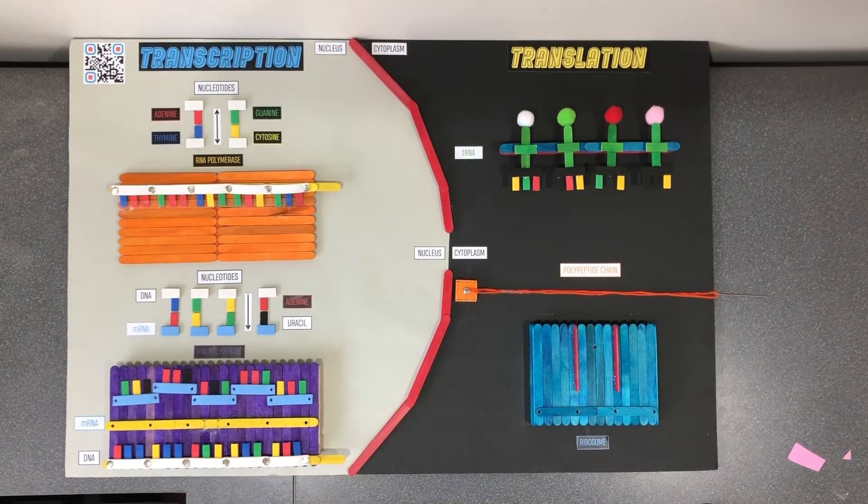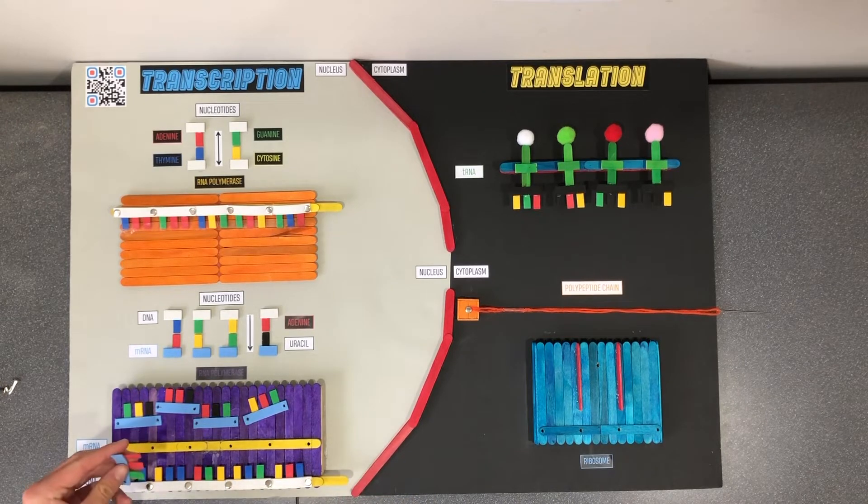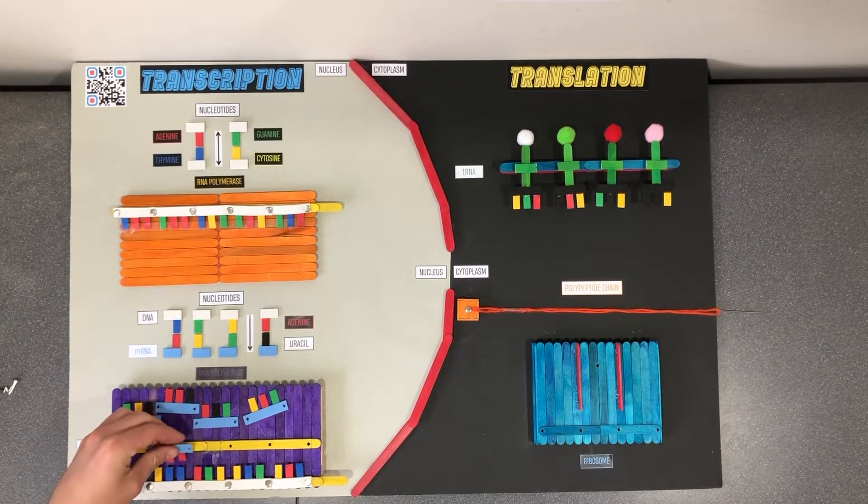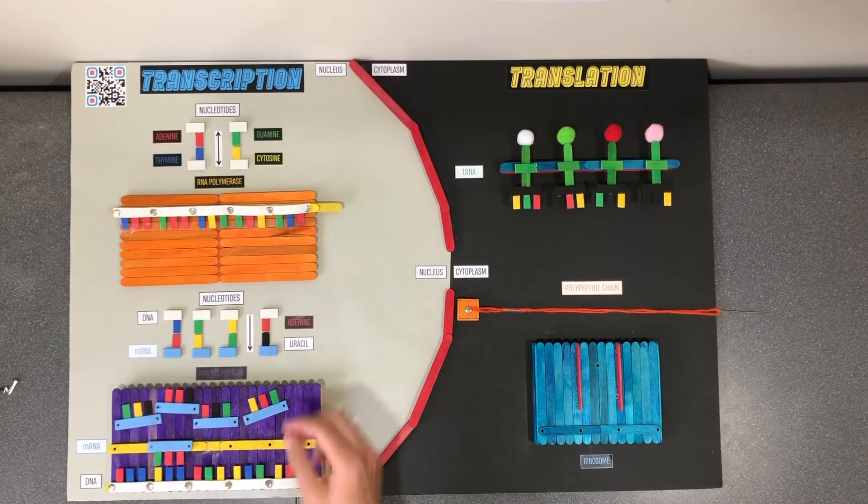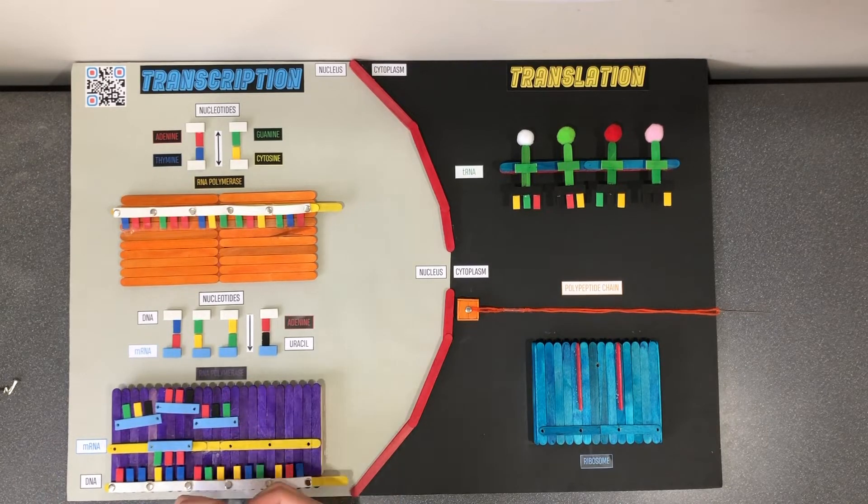Users will then attach the coding strand of the DNA to the purple platform, also representing RNA polymerase. This strand will be used as a template to compose the corresponding mRNA strand.